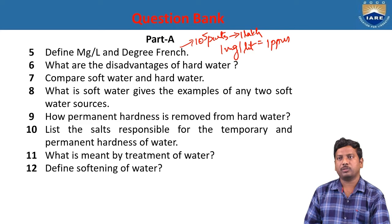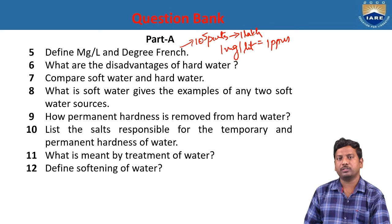Soft water is helpful for both domestic and industrial purposes. The best example of soft water is rainwater. Permanent hardness is removed from hard water by using chemical treatment methods like ion exchange process, Zeolite/GANS process, and reverse osmosis.